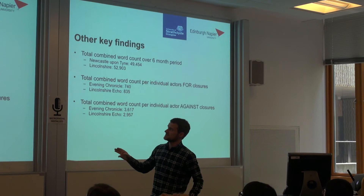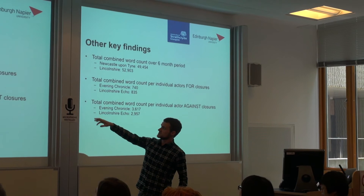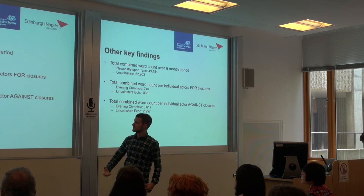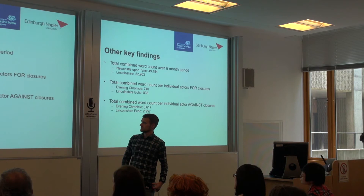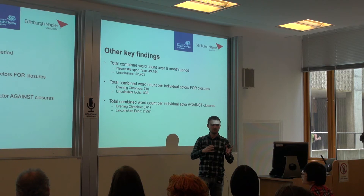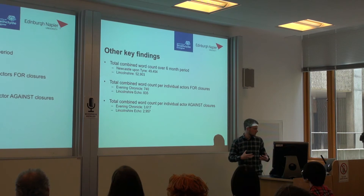The word count over the six-month period was around 50,000 words in Newcastle and 52,000 in Lincolnshire — quite significant. In terms of actors, those in favour of closures — typically councillors who were quoted — were attributed around 740 words of quotes in the Evening Chronicle in Newcastle, whereas those against the closures were given 3,500 words. This is evidence of framing: the figures suggest coverage was framed in favour of those wanting to keep libraries open, and it certainly seemed the newspapers were on the side of the campaigners.